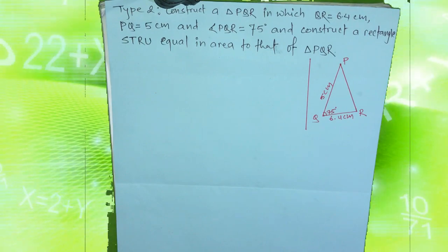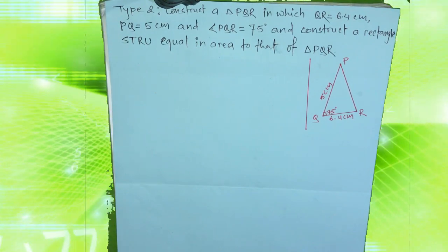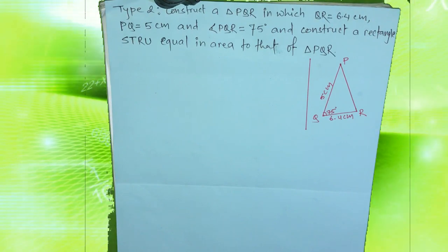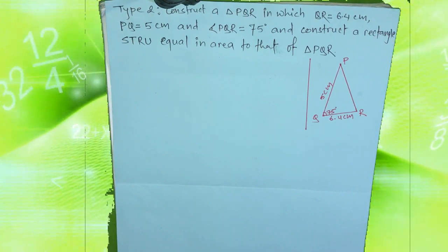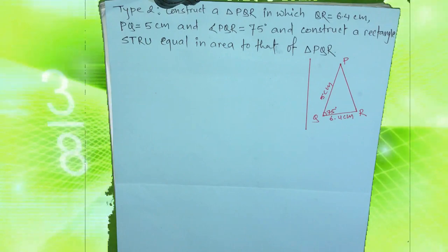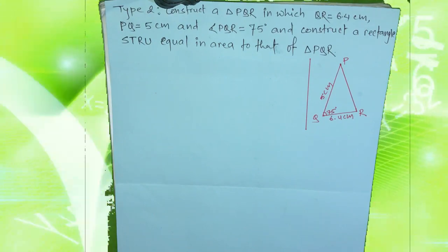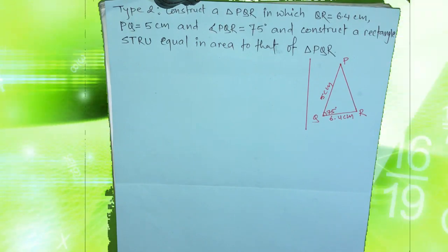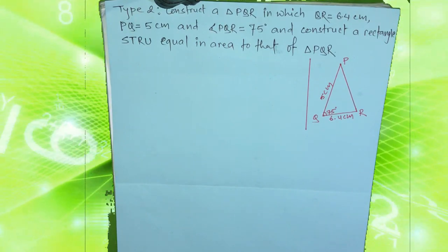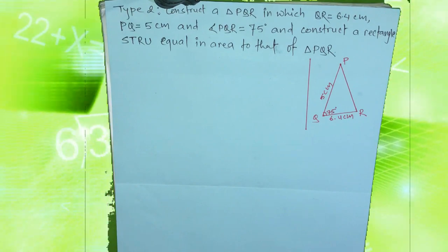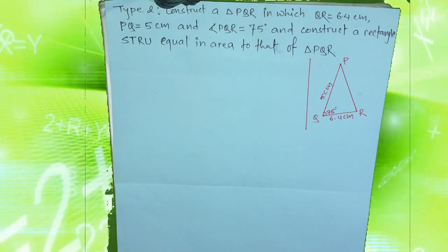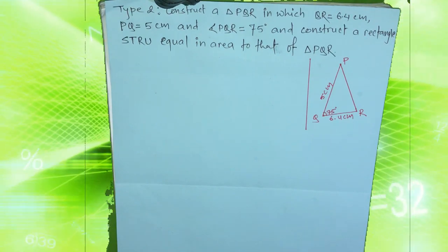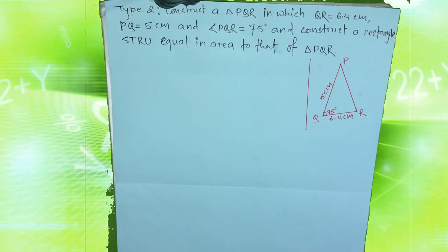The question is: construct a triangle PQR in which QR is equal to 6.4 cm, PQ is equal to 5 cm, and angle PQR is equal to 75 degrees, and construct a rectangle STRU equal in area to that of triangle PQR. So, we need to draw triangle PQR and then draw rectangle STRU equal in area to triangle PQR.